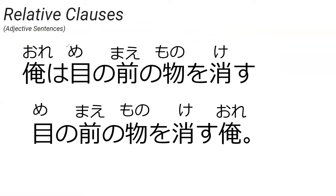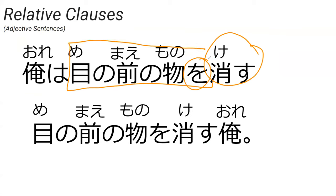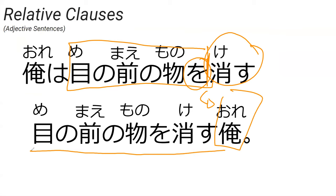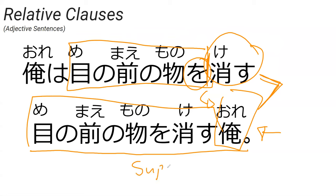To turn this into a relative clause, all you have to do is grab this verb and whatever else is attached to it — like the particle を — and throw it behind the noun. So 目の前のものを消す俺 and 俺は目の前のものを消す are basically the same thing, but here we're describing the subject. This is mostly how the majority of sentences in Japanese are made longer. Relative clauses are super popular in Japanese.